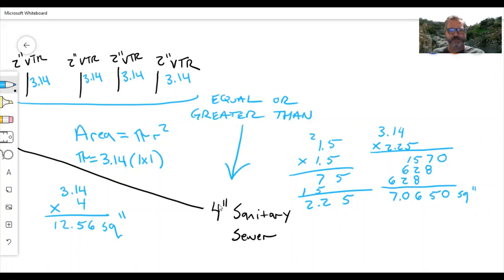Which means I can do two two-inch vents and one three-inch vent, because 3.14, 3.14, that's 6.28, 6.28 would end up being 13.34, which is higher than 12.56.